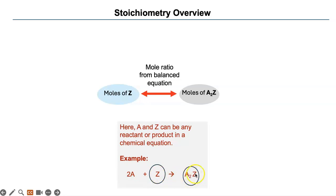So when you balance it, you need 2 moles of A to get 2 moles of A here, and Z is 1 and 1 moles.